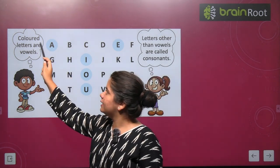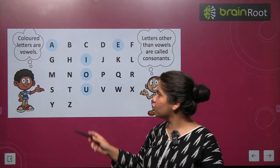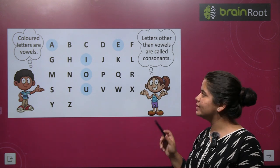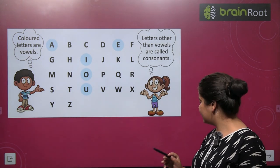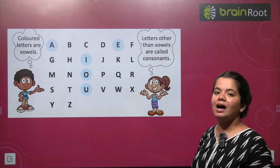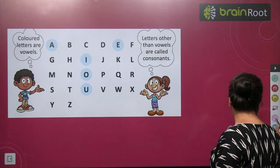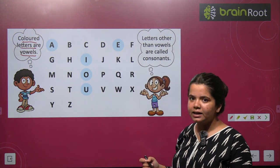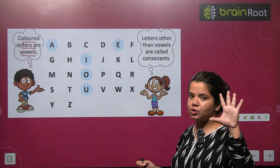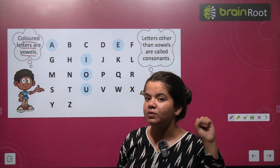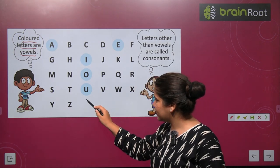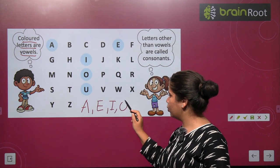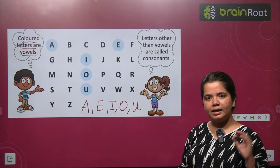Let's see what we have written here. Colored letters are vowels. In 26 letters, those that are colored are vowels, and those that are uncolored are consonants. You must remember that in our English language there are 5 vowels. Five vowels: first is A, then E, I, O, U. These are the 5 vowels.